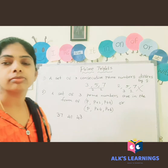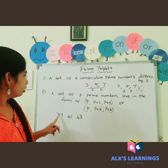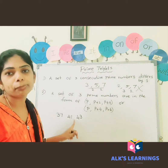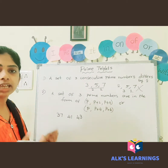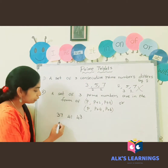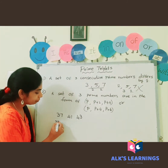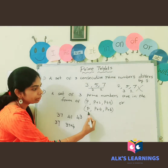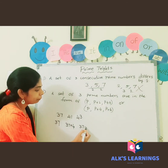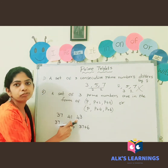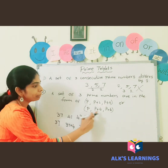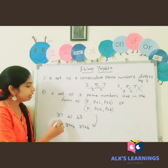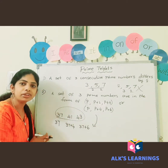Now let's take some bigger numbers: thirty-seven, forty-one, forty-three. These three are prime numbers. Here P is thirty-seven; thirty-seven plus four is forty-one; and thirty-seven plus six is forty-three. This satisfies the condition P, P+4, P+6, so these three numbers are prime triplets.